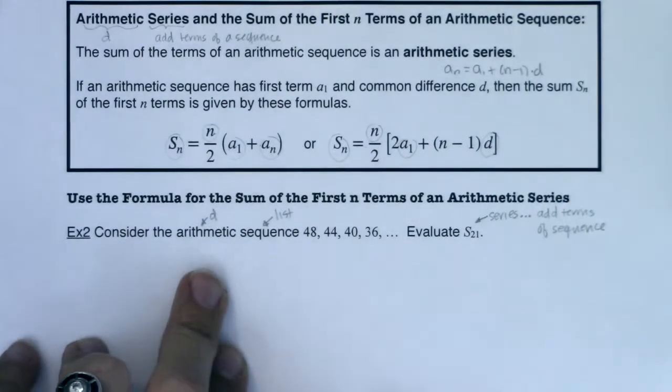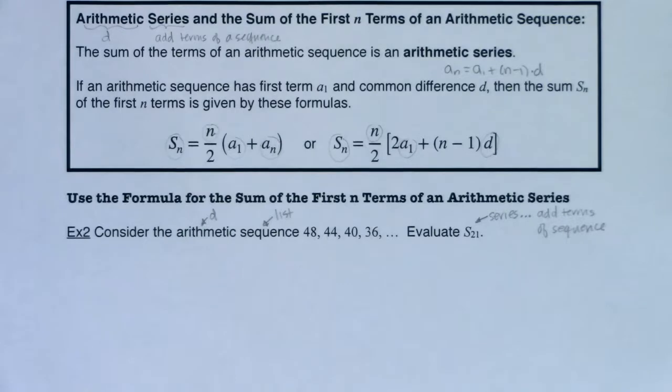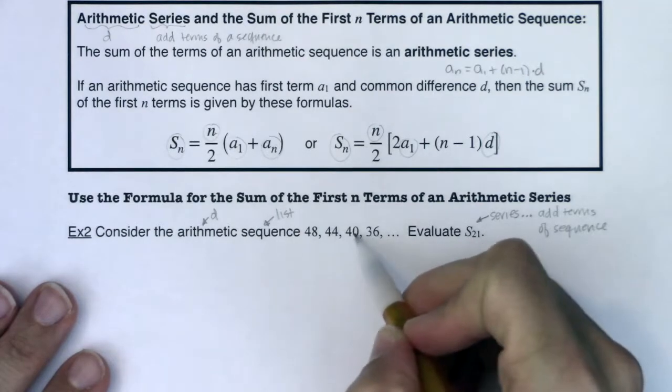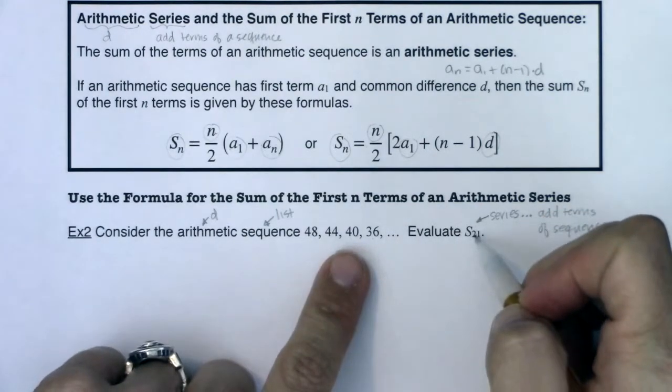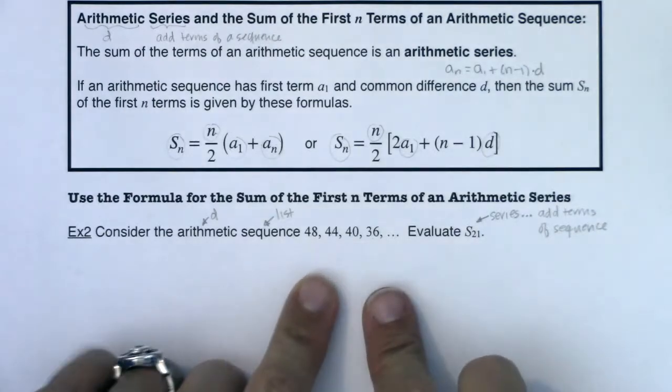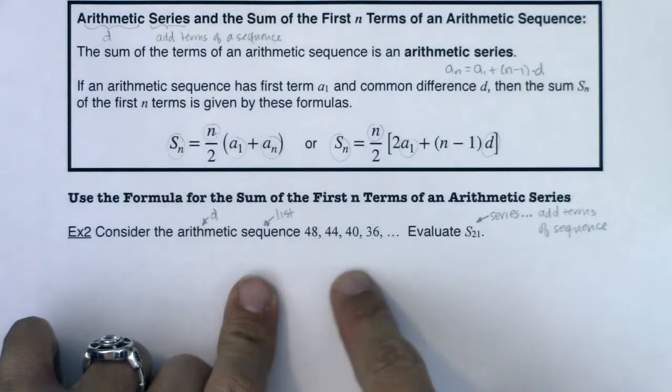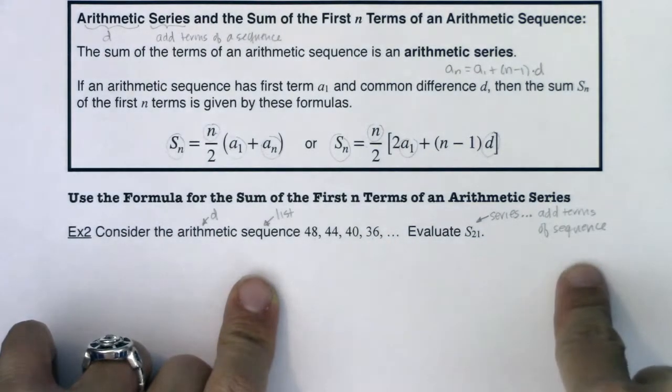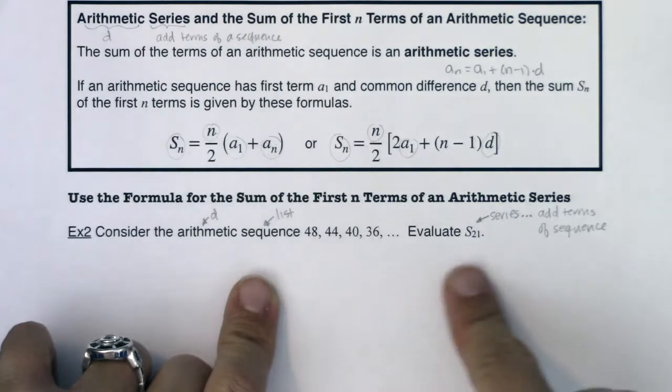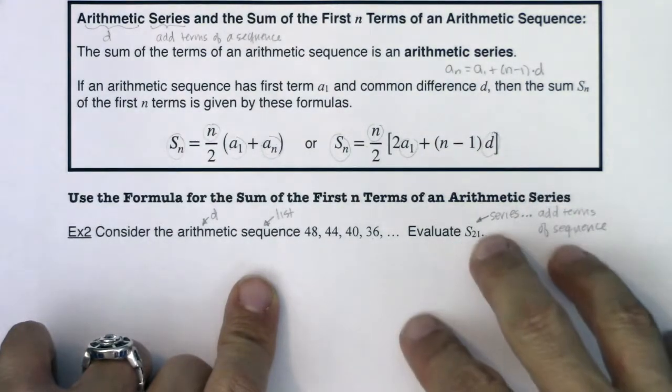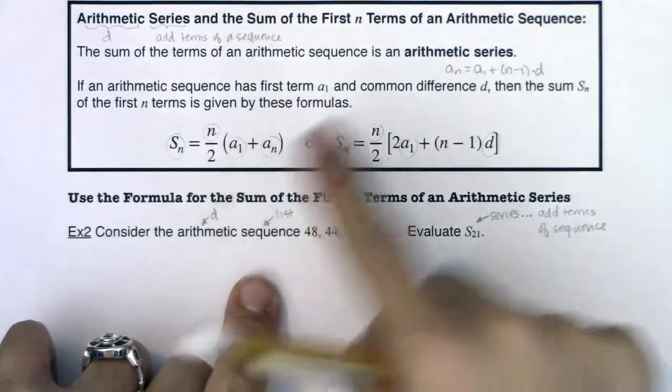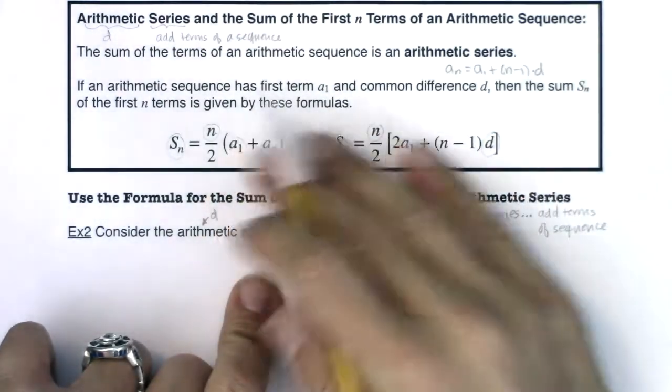So before we get going on this, I want to explain to you the really long way of doing this problem. If you look at what we have so far, we have a₁, a₂, a₃, a₄. If they're asking you to find s₂₁, what they really want you to do, again this would be the long way, is to write out the first 21 terms of the sequence, and you only have the first four right here. You'd have to find another 17 terms. So you could list out the first 21 terms of the sequence, and then add them all together. And that would take you a little while. That's why it's better to start to work these formulas.